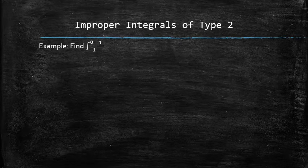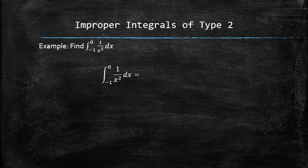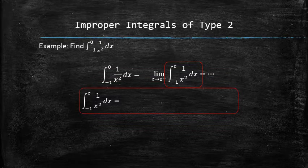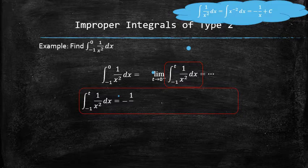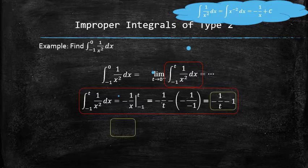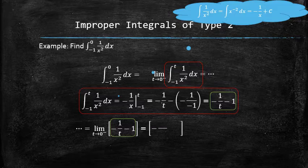Let's do an example and compute the following integral. We replace the upper limit 0 with t and set up a limit with t approaching 0 from the left. Now that we don't have to worry about the discontinuity in the upper limit, we can focus on the integral itself. We use the integration rules to find the general antiderivative and then apply the fundamental theorem of calculus to find the integral in terms of the variable t. Only now we can come back to the original problem and focus on finding the limit. We have a variety of tools available, including graphical, numerical, and analytical approaches. In this case, we were able to find the limit to be equal to infinity and therefore we conclude that the original integral diverges.